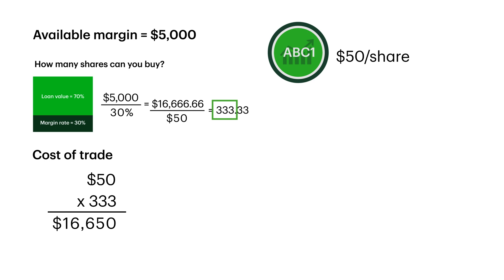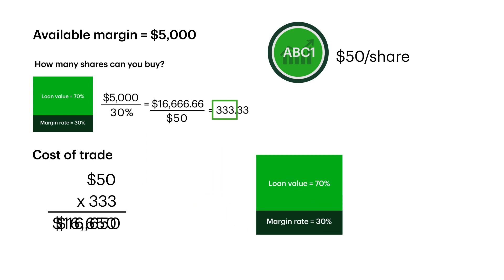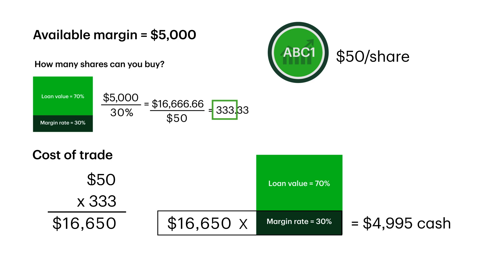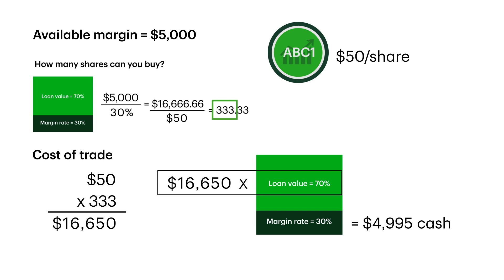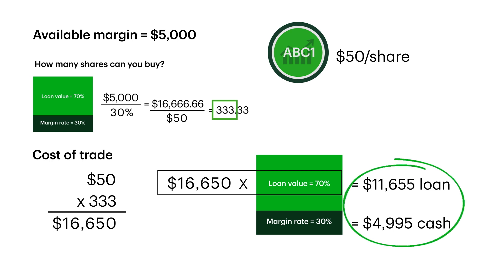Now, how much would you have to pay in cash, and how much would the broker lend you on margin? To calculate what you would owe, multiply $16,650 by 0.3. This totals $4,995. Remember, because of that fractional share that we dropped, our amount is slightly less than $5,000 plus commissions. To calculate the loan value, multiply $16,650 by 0.7, the remaining 70%. Alternatively, you can subtract $4,995 from $16,650. This results in a loan value of $11,655.